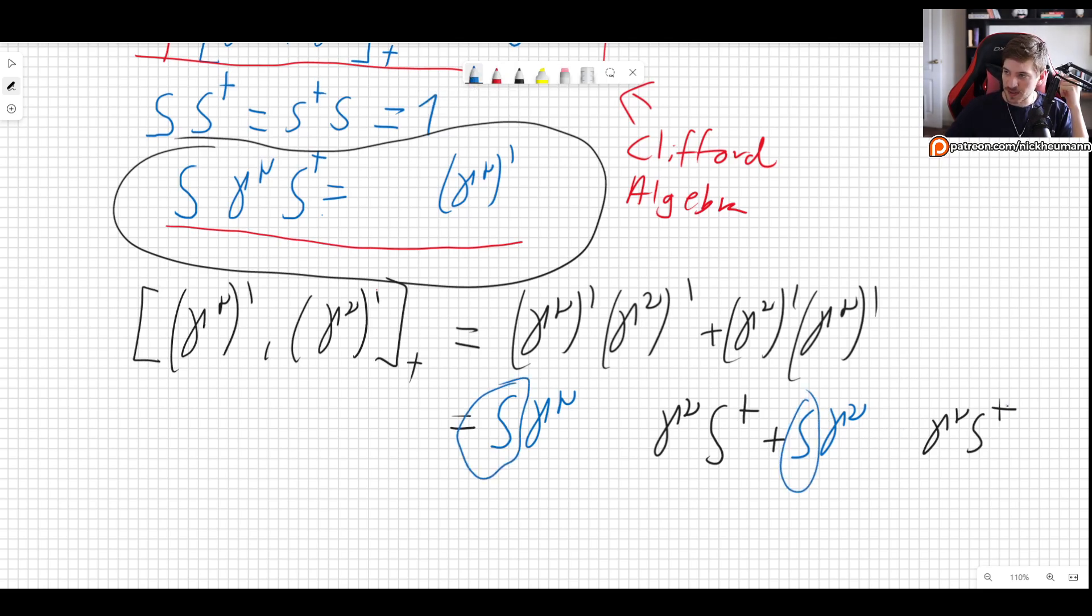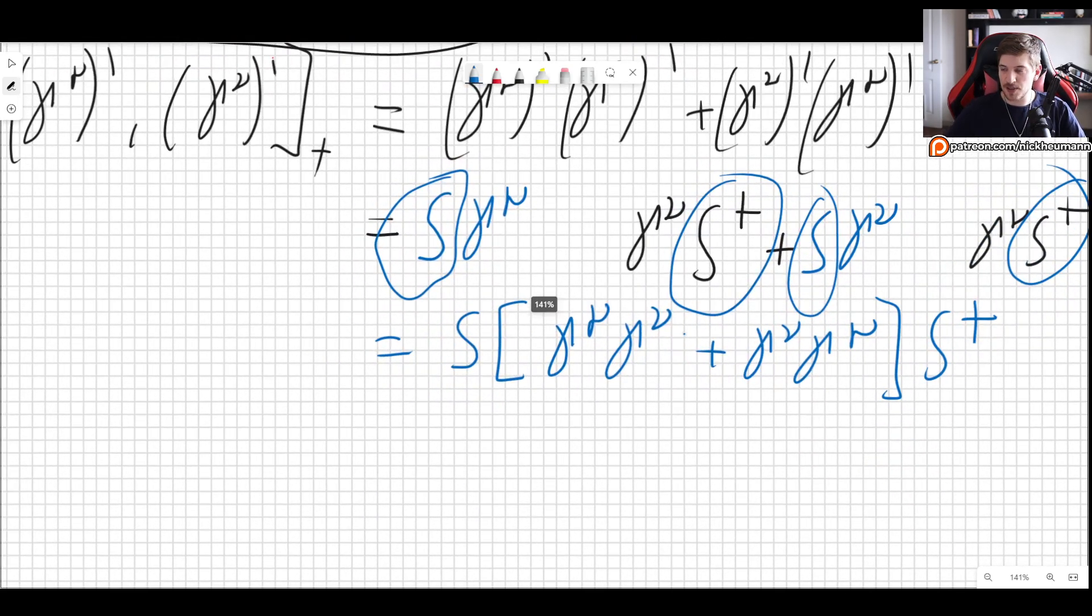So now we have an S multiplying from the left and S dagger from the right. So we can factor them out. So we get S times gamma mu gamma nu plus gamma nu gamma mu times S dagger. So what we have inside is simply the anticommutator of gamma mu gamma nu.